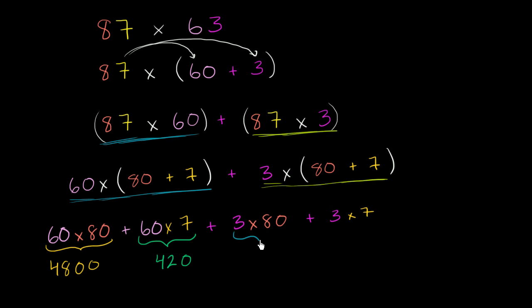And then 3 times 80, well same logic, 3 times 8 is 24, so this is going to be 240. And then finally, 3 times 7 is 21.